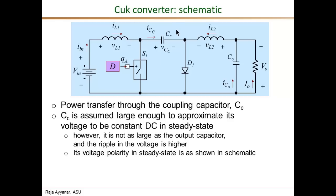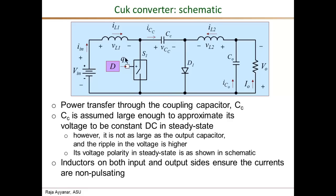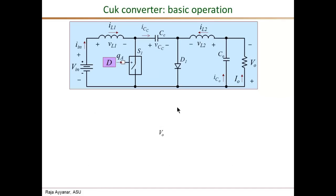The voltage polarity of the coupling capacitor will come through our analysis later, but its voltage polarity is positive on one side. The inductors at the input as well as the output side ensure that both input and output currents are non-pulsating, meaning the input current is smooth and the output capacitor requirement is small. To help with steady state analysis and to derive the Ćuk converter from the cascade connection of a boost converter followed by a buck converter, let's look at the equivalent circuits valid in the on and off intervals.